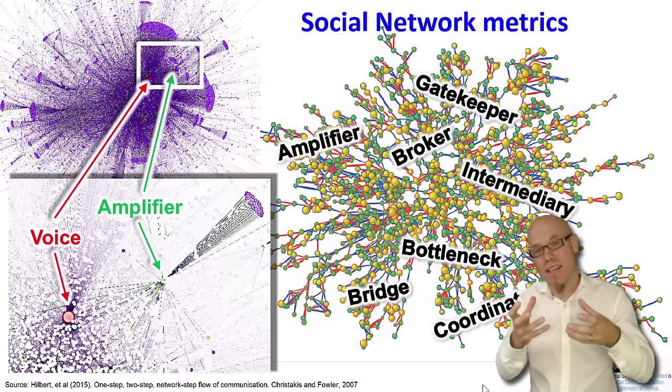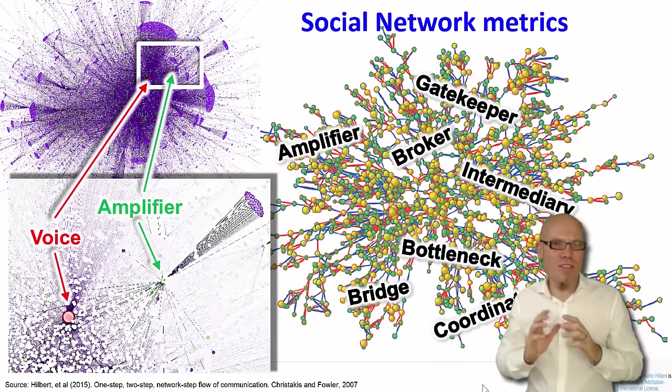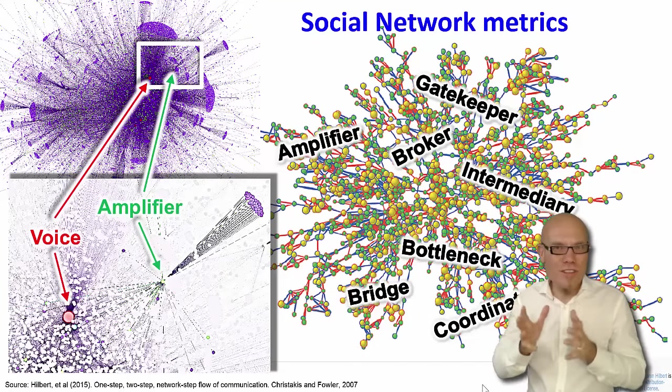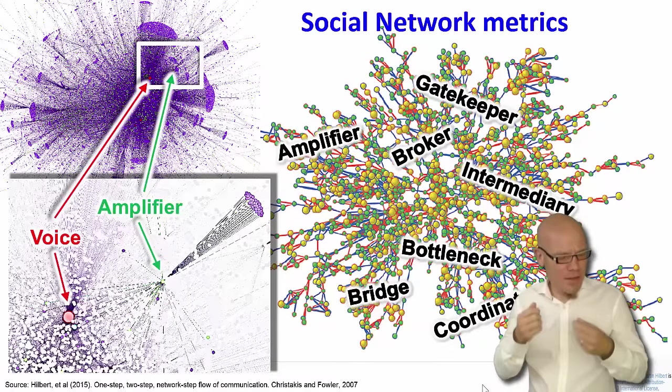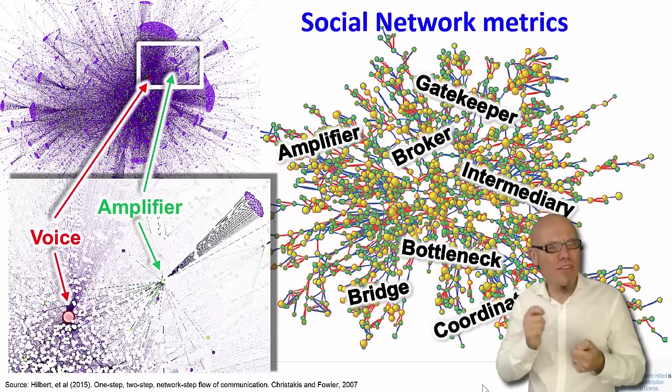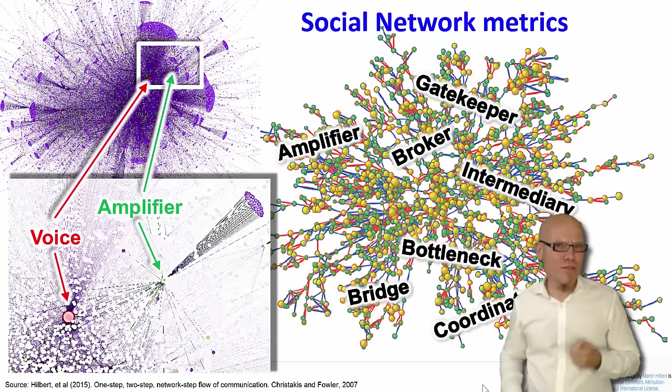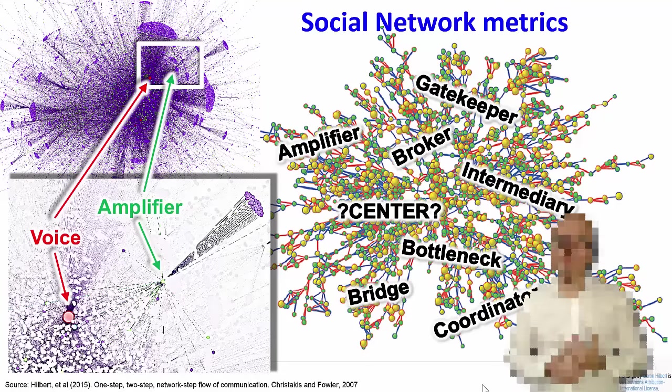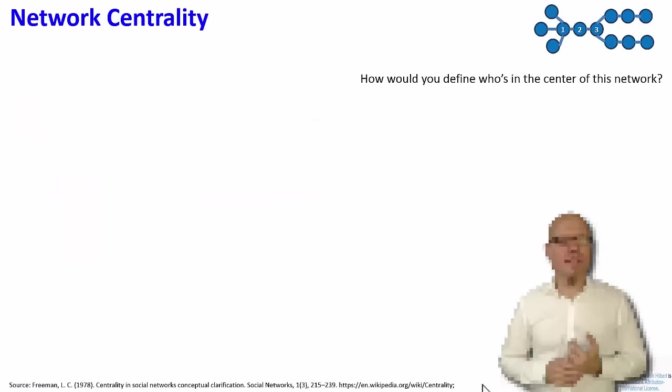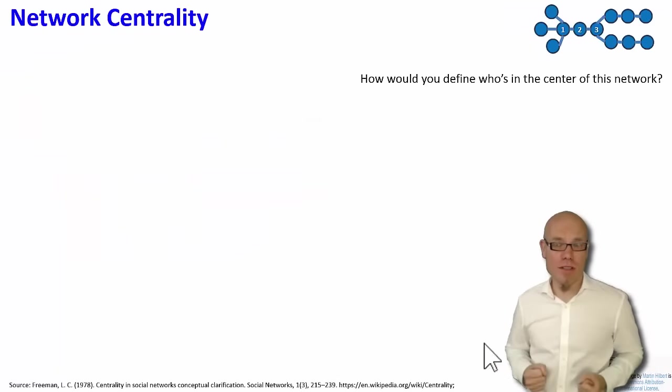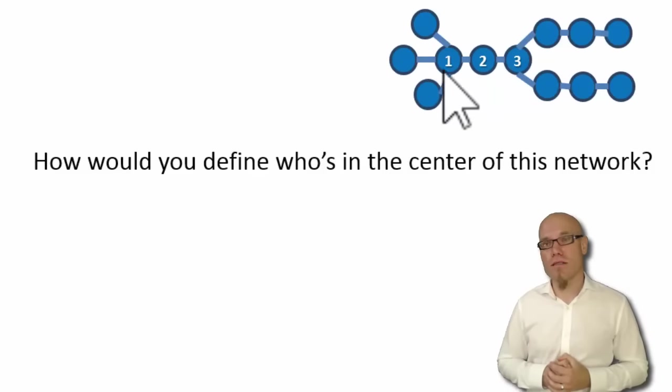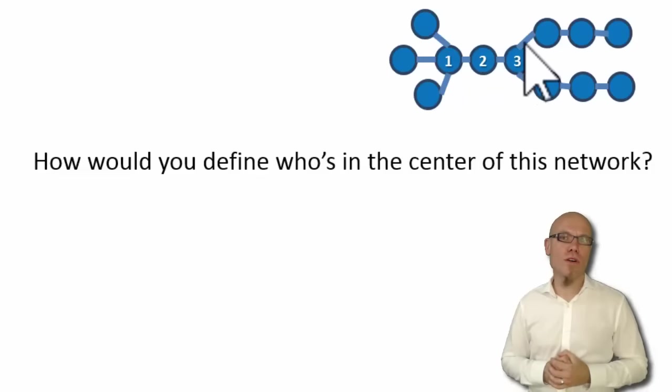Now, there's no need for you to know these different terms, and also different researchers use them differently. The fact of the matter is that networks allow you to give a quantitative meaning to all of them. I want to introduce one of them to you. And that has to do with the question, who's the center of a network? For example, here you have a network. And who do you think is the center of this network? Is it node number one, two, or three?